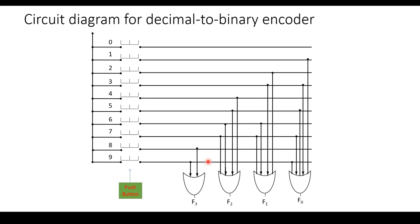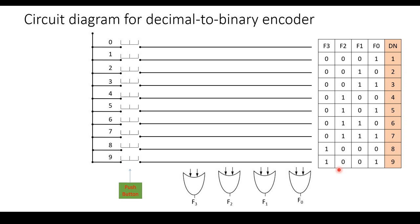Now we are going to see the circuit diagram for decimal to binary encoder. On the left-hand side you can see the decimal values from 0 to 9. There is a push button which supplies the signal to the circuit. You have 4 output lines — F0 to F3 — which are OR gates. So 9 lines and 4 outputs from F0 to F3 have to be drawn.